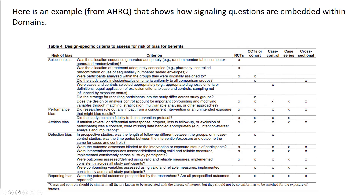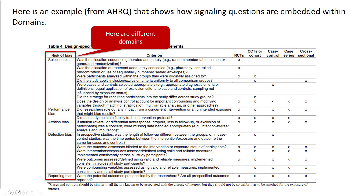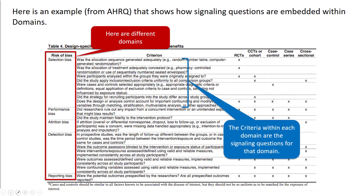Here's an example from AHRQ that shows how signaling questions are embedded within domains. You can see on the left the different risk of bias domains. Within each domain, there are a set of criteria or signaling questions that we would answer to make a decision about whether selection bias, performance bias, attrition bias, detection bias, etc., was present in the study we were looking at.